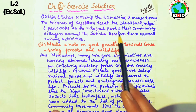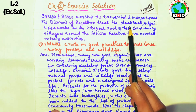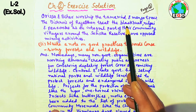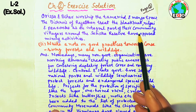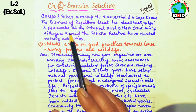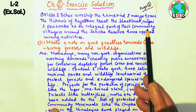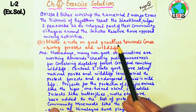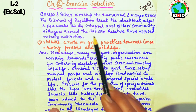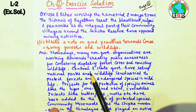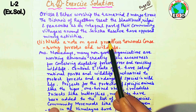Local communities have placed restrictions on mining activities and other exploitative uses around their forest areas. In this way, local communities have conserved and preserved forests and wildlife, and some have actively opposed harmful activities.